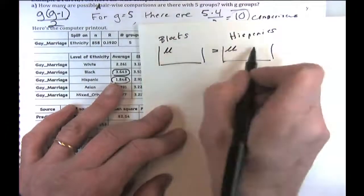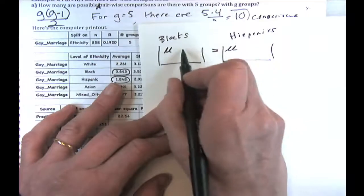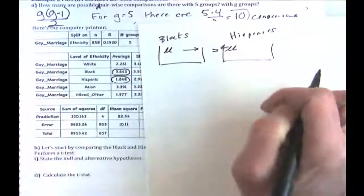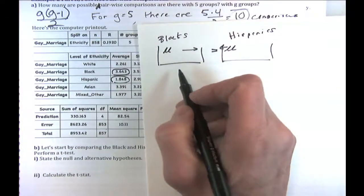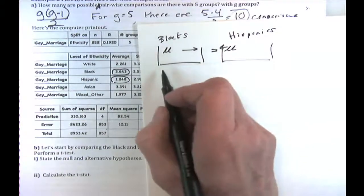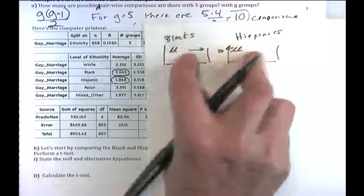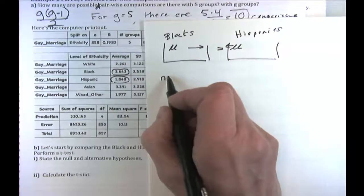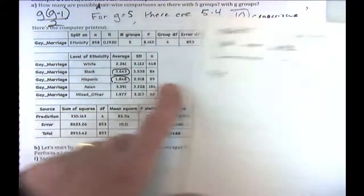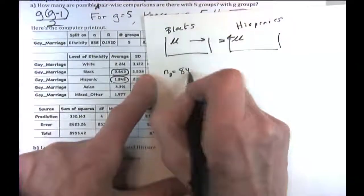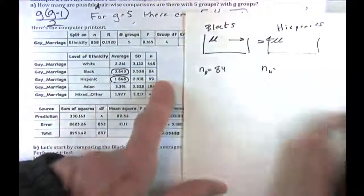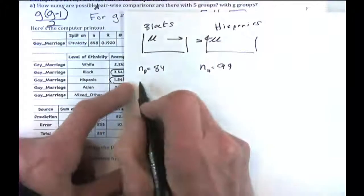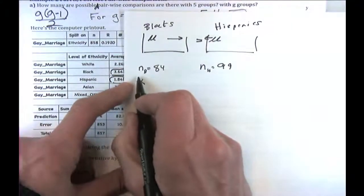Our usual two-sample test would be: Z or T equals the observed difference minus the expected difference (zero under the null) over the standard error of the difference. The standard error of the difference is the square root of the standard error for each group's mean squared, added together — like the Pythagorean theorem.